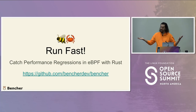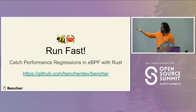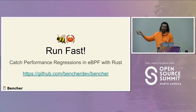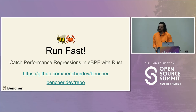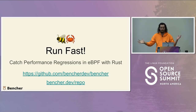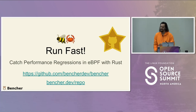That has been RunFast: Catch Performance Regressions in Rust. Here is a link to the repository — all source code is under examples/eBPF. If you're too lazy to type that out, bencher.dev/repo will send you straight there. If you like the project, please give us a star. Thank you.